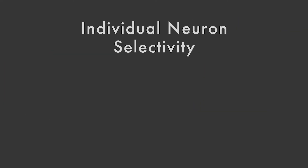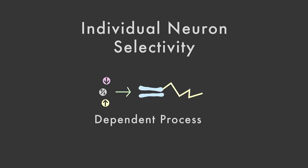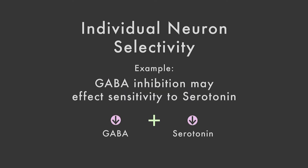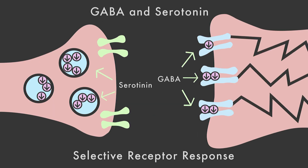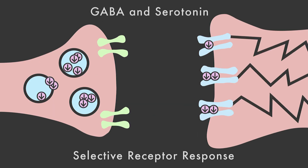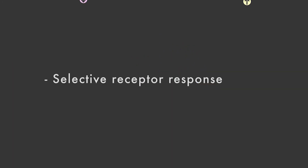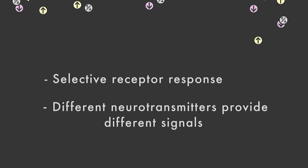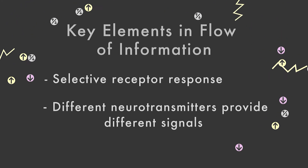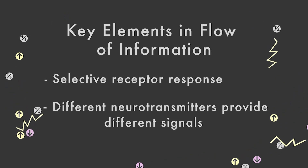Another key idea is that individual neurons are selective in what neurotransmitter they will respond to. Many neurons are responsive to more than one neurotransmitter, but even so, each neuron has its own pattern of sensitivities. For example, a neuron inhibited by GABA will respond differently, or perhaps not at all, to molecules of serotonin that happen to float by. This notion of receptors being selective in their response and the idea of different neurotransmitters providing different signals are key elements in controlling the complex flow of information throughout the brain.